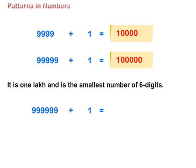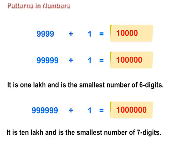9,99,999 plus 1 is equal to 10,00,000. The number name for 10,00,000 is ten lakhs. It is the smallest number of 7 digits.